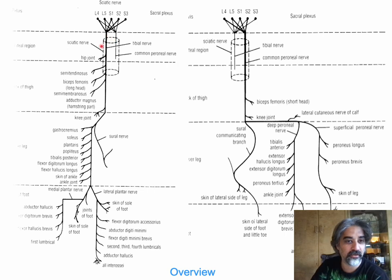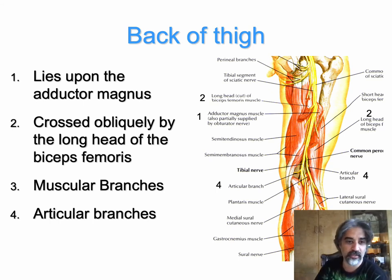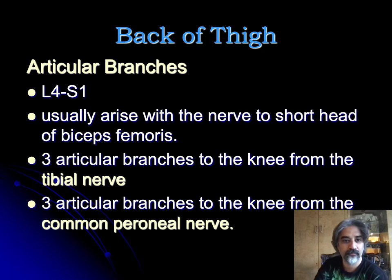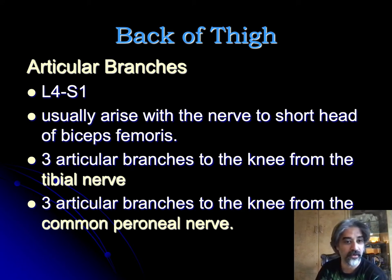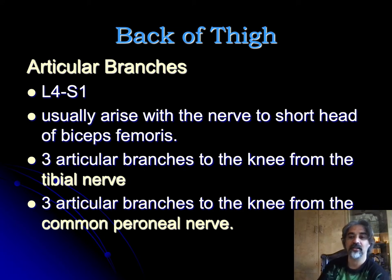Now we're going to do the back of the thigh. You can see there's some innervation there. In the back of the thigh, it lies upon the adductor magnus and is crossed obliquely by the long head of the biceps femoris. It gives off muscular branches and then articular branches to the knee. The articular branches, L4 through S1, arise with the nerve to the short head of the biceps femoris — that's going to be the common peroneal component. There are three articular branches to the knee from the tibial nerve and three from the common peroneal nerve. Combined, I think these are what we call the genicular nerves along with the femoral nerve, even though there is no true genicular nerve — but this is important because people do genicular nerve blocks to help people with knee pain.